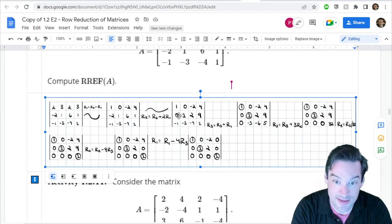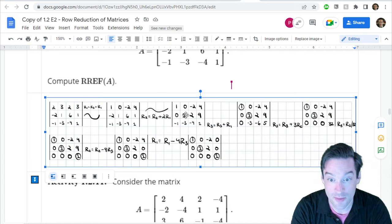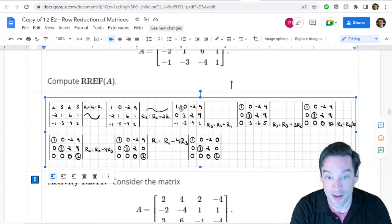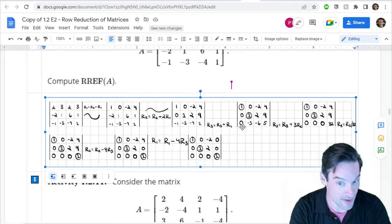Because then we can use that one to cancel out the negative two that's underneath it and make it into a zero. And then also to cancel out the negative one that's at the bottom by adding one copy of the first row into the third row. And so then it's wiped out everything on its column.